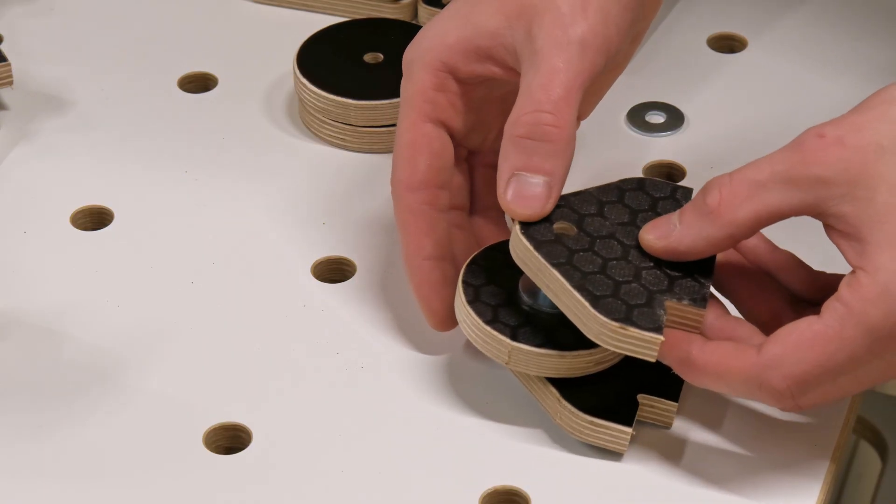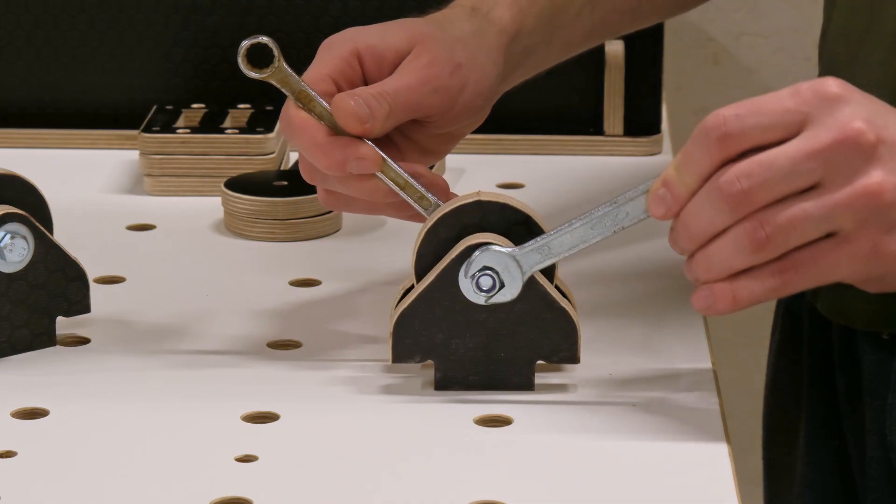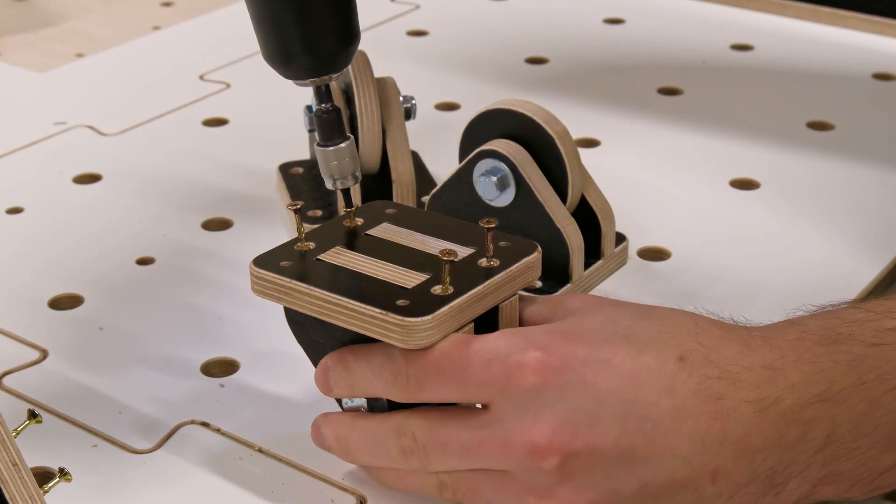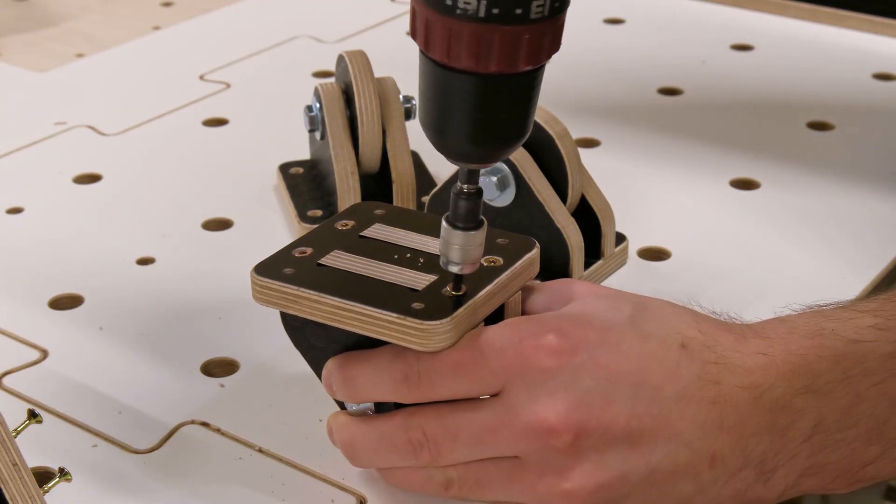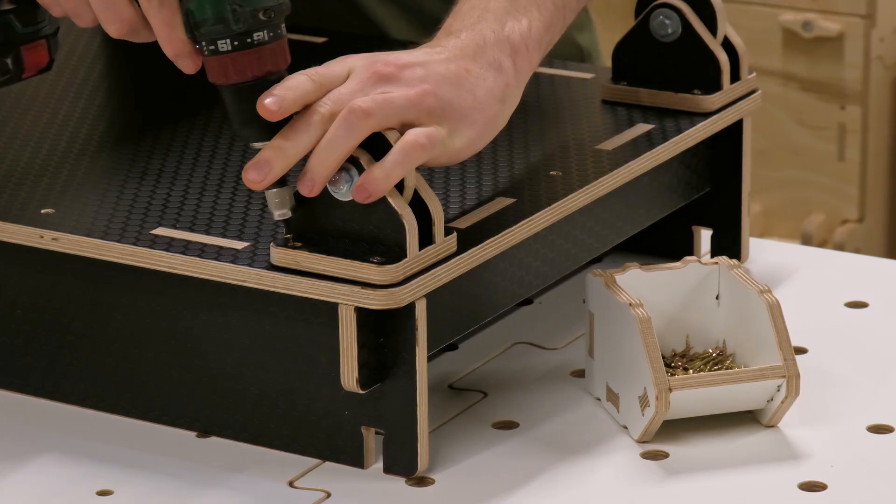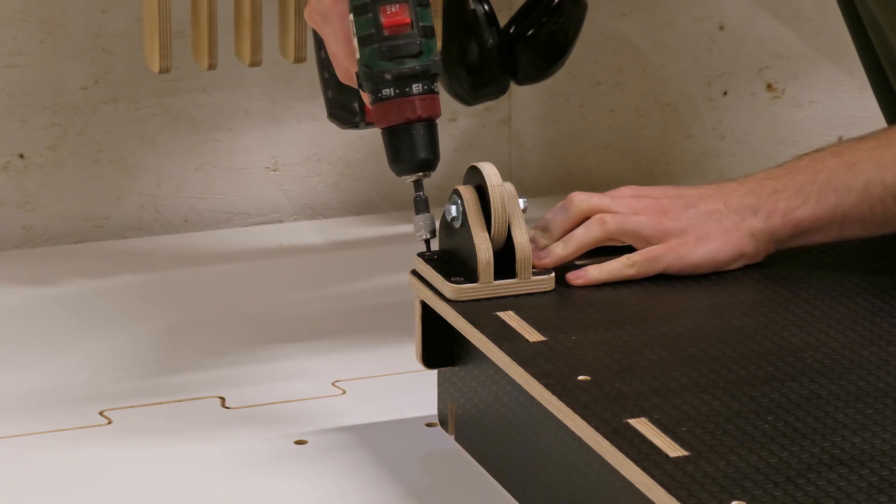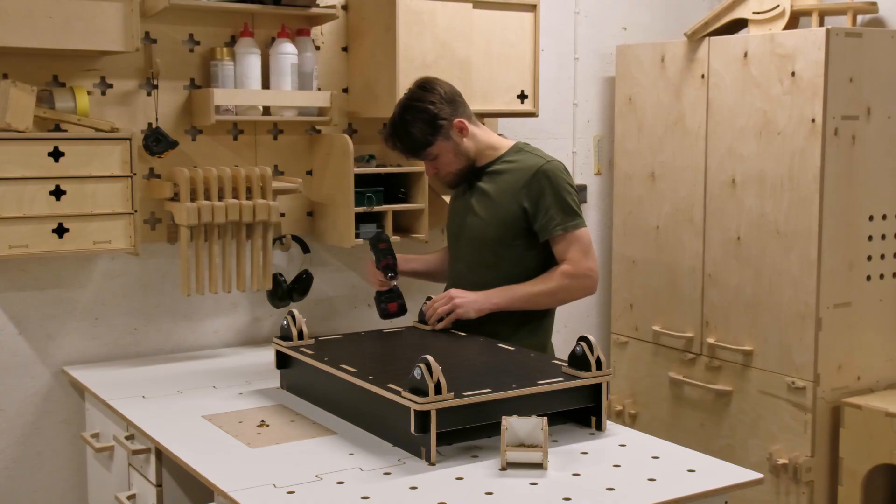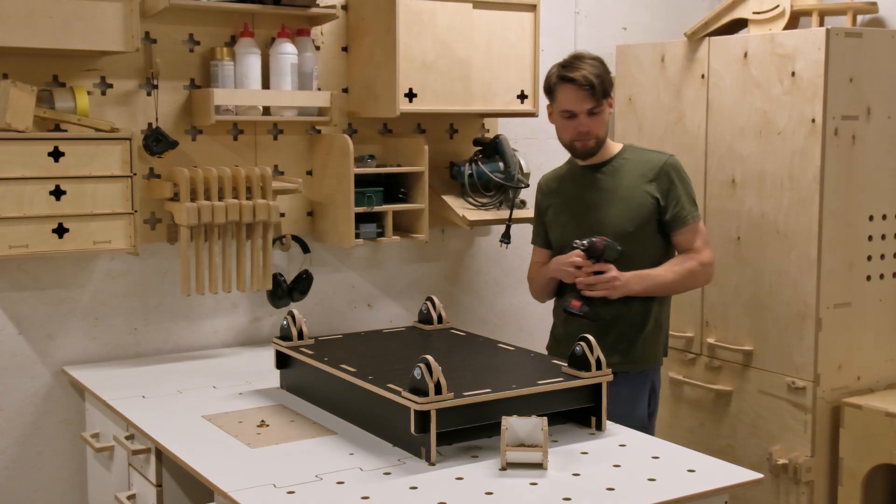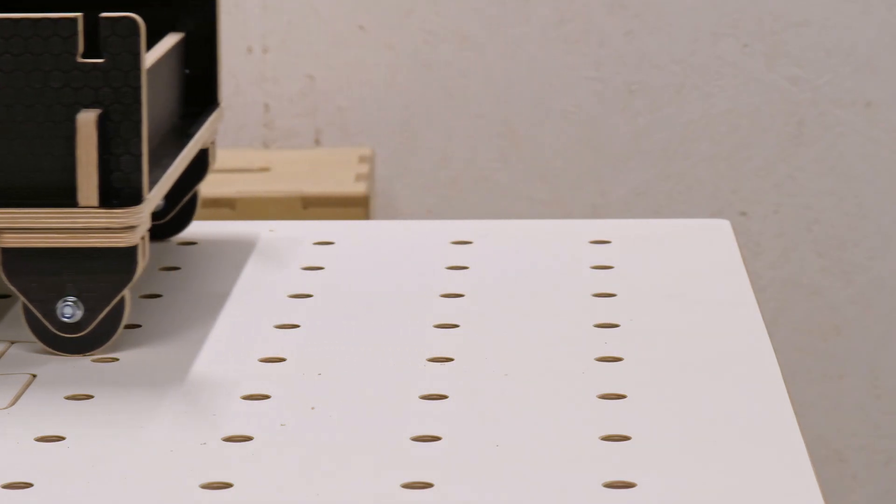To make the offcut pile movable, we also add some wheels. I am using the same type of casters we used on the dust collection cabinet. Simple, durable, and perfect for workshop use. You can also get the free DXF files for these casters on ribobox.com.